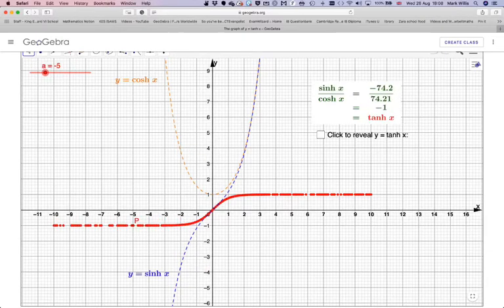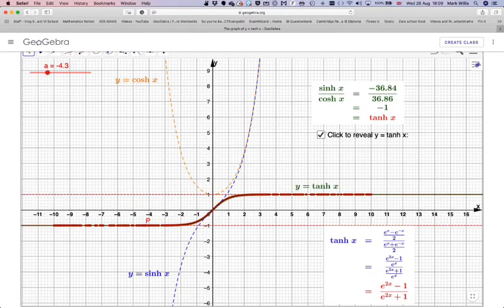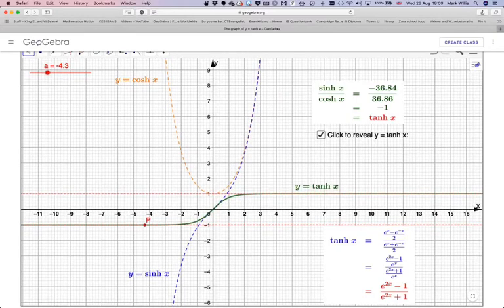So this is called the graph of tanh of x. If we click here, we can actually get the graph. So the green one here is the actual graph.